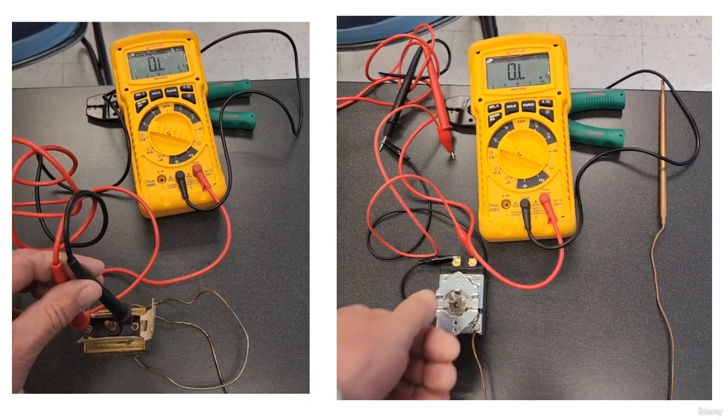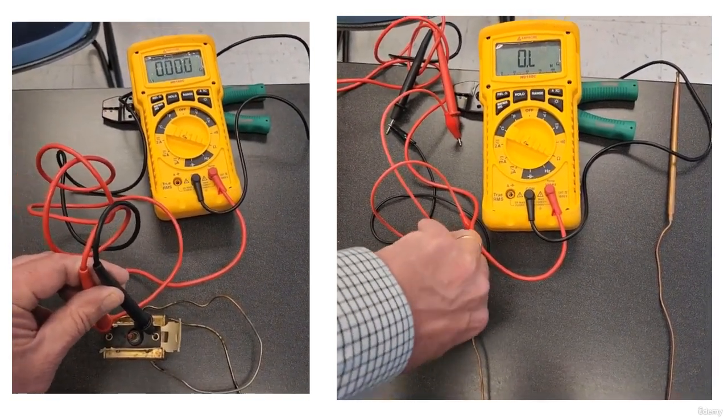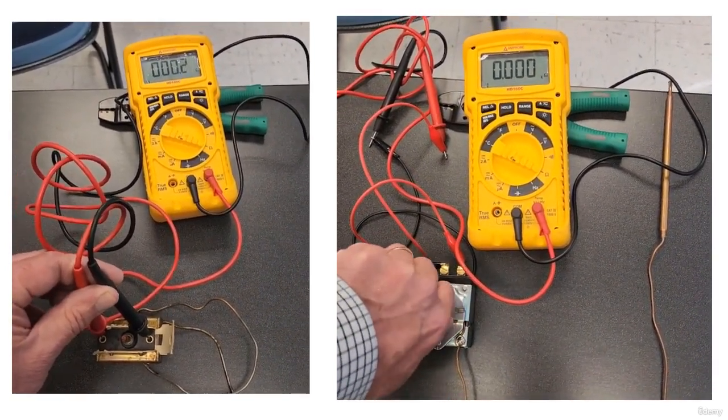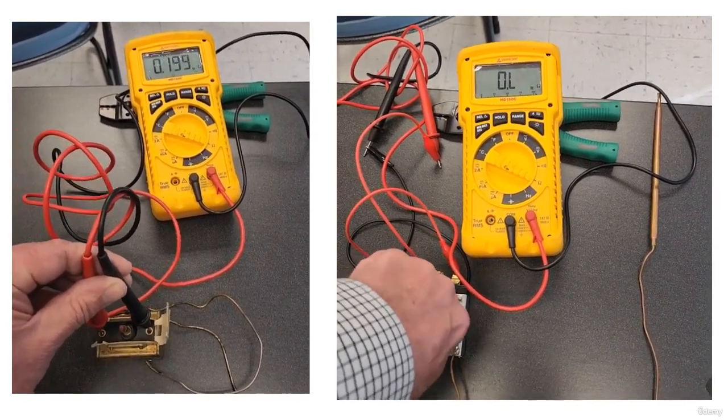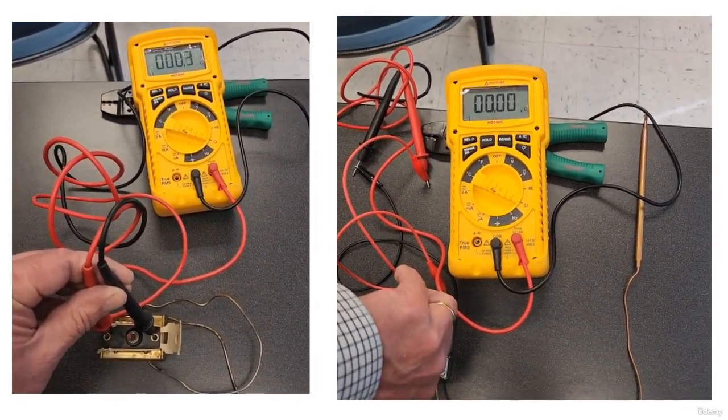Testing one is the same as testing a standard switch. You put a meter across the leads to see if you have continuity of a half ohm or less when it's supposed to be closed, and infinite ohms if it is supposed to be open. The temperature set point dictates that.